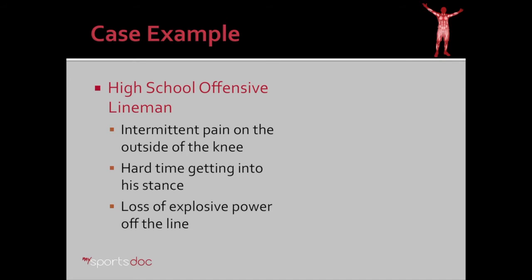Our case example for this video is a high school offensive lineman who started reporting intermittent pain on the outside of the knee. He was able to tolerate it for a while but ultimately had a hard time getting down into his stance because of the high flexion of the knee which would pinch the meniscus. He also started losing explosive power off the line, and unfortunately this happened right in the middle of the season, so he debated long and hard about whether or not to have it surgically treated.